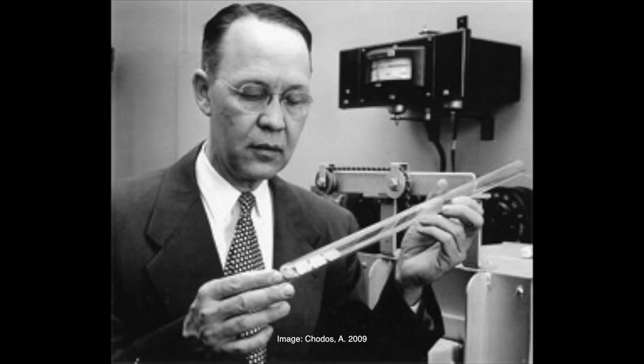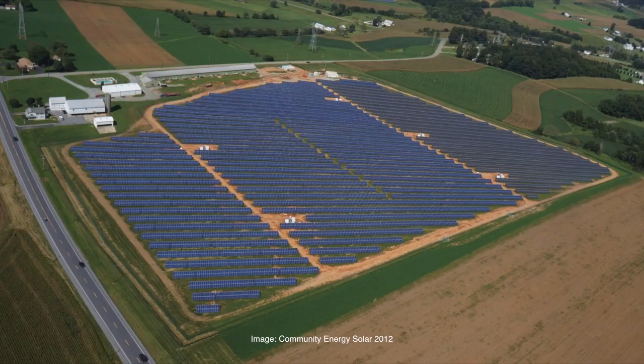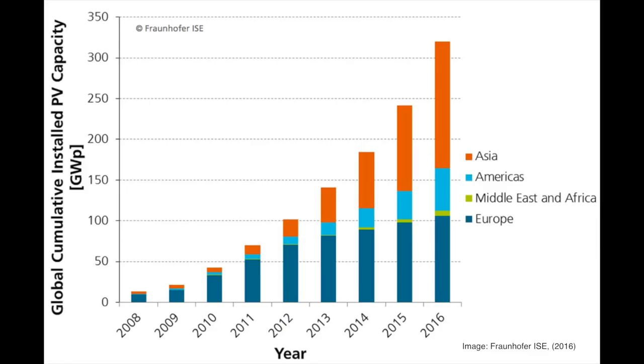Silicon PV solar cells were invented by Bell Laboratories in 1954. Initially, they were primarily used as a power supply mechanism for space vehicles. Only in the last 20 years has their use been adapted for commercial utility-scale power generation.